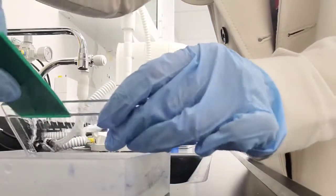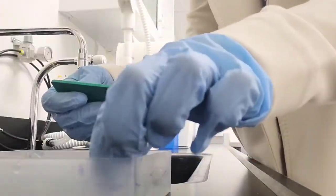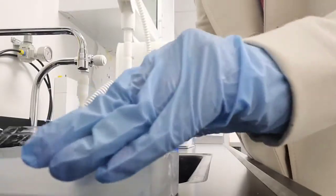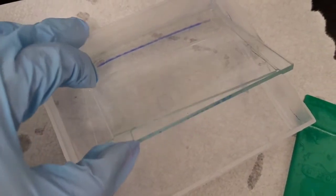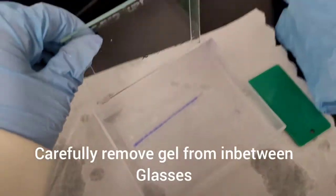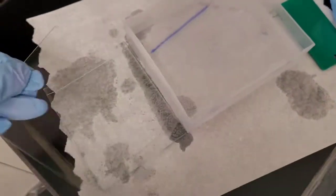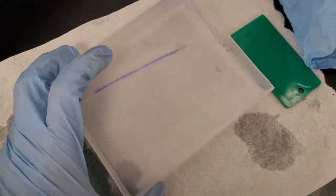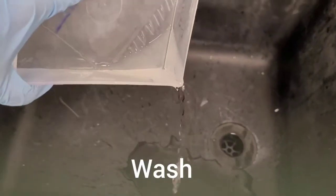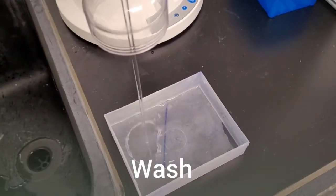Then you can disassemble everything and remove the gel from the slides. If you're having difficulty, leave it in water for some time and it will come off more easily. Then wash the gel with water about two times to get rid